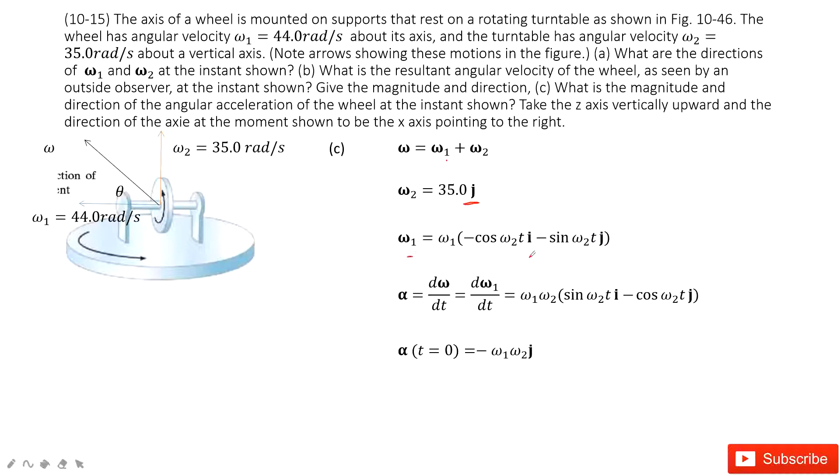But for omega 1, we need to consider two parts. First, it rotates with this small circle. Also, it rotates with omega 2. For time t, how much angle has it moved? From the initial position, for delta t, the angle it moved is omega 2 times t. This is the angle.